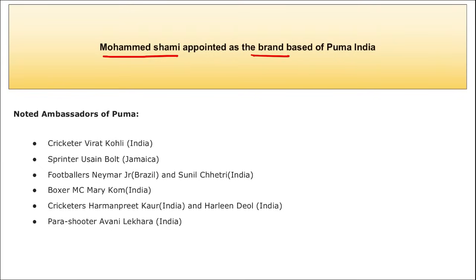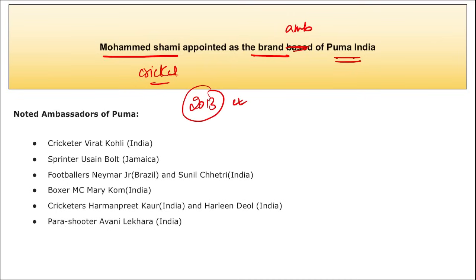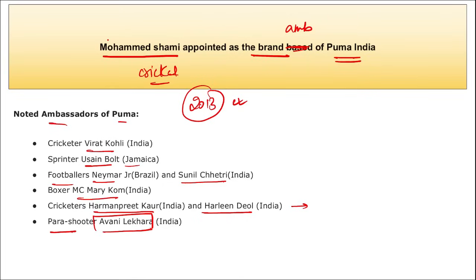Mohammed Shami has been appointed as the brand ambassador of Puma India. He will be promoting Puma shoes, clothing, and accessories through various activities and campaigns. Shami is a cricketer who plays for the Indian cricket team and made his international debut in 2013. Other ambassadors of Puma include Virat Kohli, Usain Bolt, footballer Neymar Jr., Sunil Chhetri, boxer Mary Kom, women cricketers Harmanpreet Kaur and Harleen, and para-shooter Avani Lekhara.